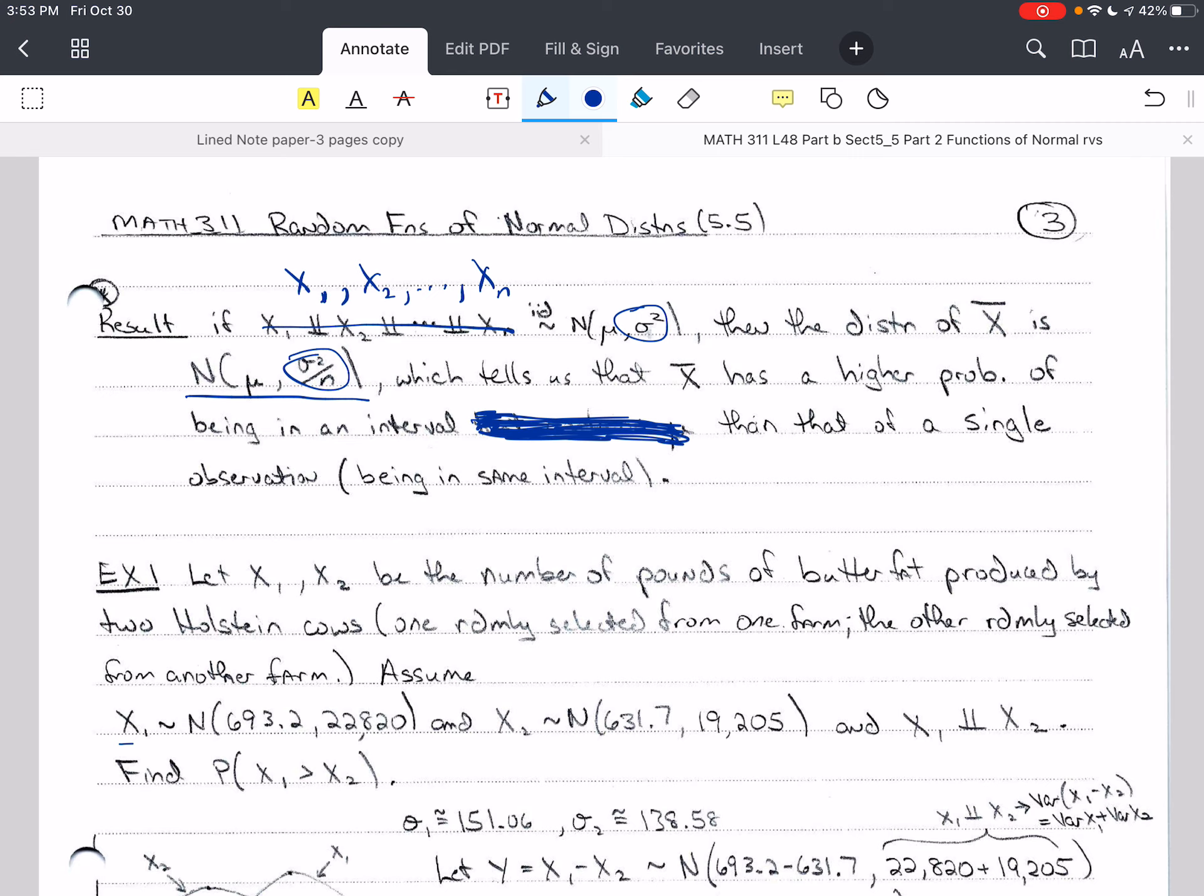So let's do an example. Let x₁ and x₂ be the number of pounds of butterfat produced by two Holstein cows. To keep these cows independent, we selected one from one farm and the other from another farm, and they were randomly selected.